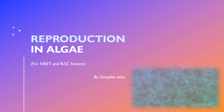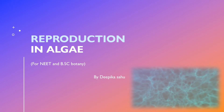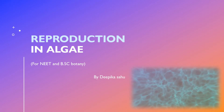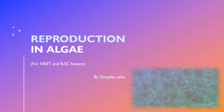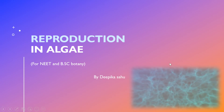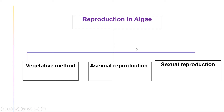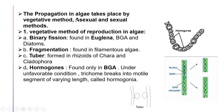Welcome to Biology with Deepika. In this video we will be learning about reproduction in algae. This will be very helpful for BSc Botany students and NEET preparation students. Reproduction in algae can be divided into three types: the vegetative method, asexual type of reproduction, and sexual type of reproduction.